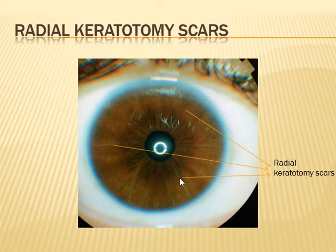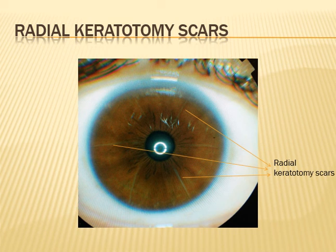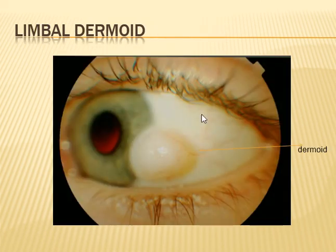In this image you can see lines radiating from the limbus going towards the central area. These are called radial keratotomy scars. This was a previously used method of refractive surgery, where keratotomy incisions were made to flatten the cornea and change the corneal curvature. Nowadays this is not done — the most commonly used procedures are laser refractive surgeries like LASIK and LASIK SMILE.